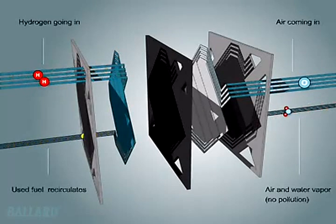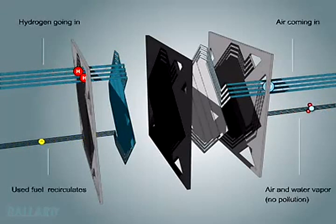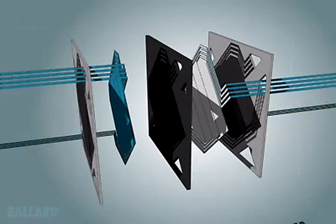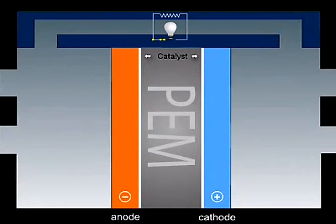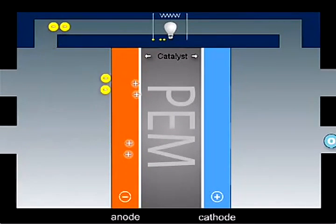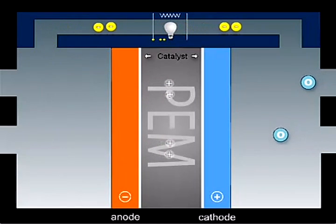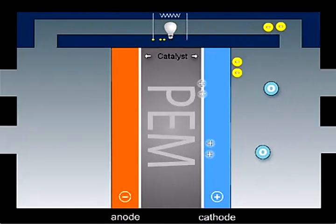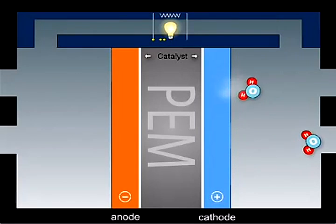Hydrogen from an onboard storage tank and oxygen from air are fed through channels on the plates. Hydrogen flows on one side of the membrane, air on the other. The catalyst splits the hydrogen molecule into protons and electrons. The protons can pass through the membrane. The electrons cannot and have to pass through an external circuit creating useful electricity.